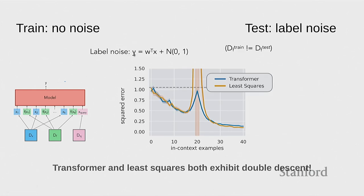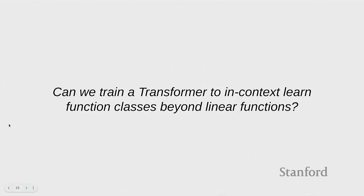Here's something really interesting: what happens if you add label noise at inference time? In training, there's no noise. At test time, you do add some Gaussian label noise. Least squares actually blows up here — this is a phenomenon called double descent, which has been pretty well studied in learning theory. And interestingly, the transformer has a similar spike. At least qualitatively, it has some similarities to least squares, at least as measured by this kind of reaction against noise — even though it's not exactly least squares.